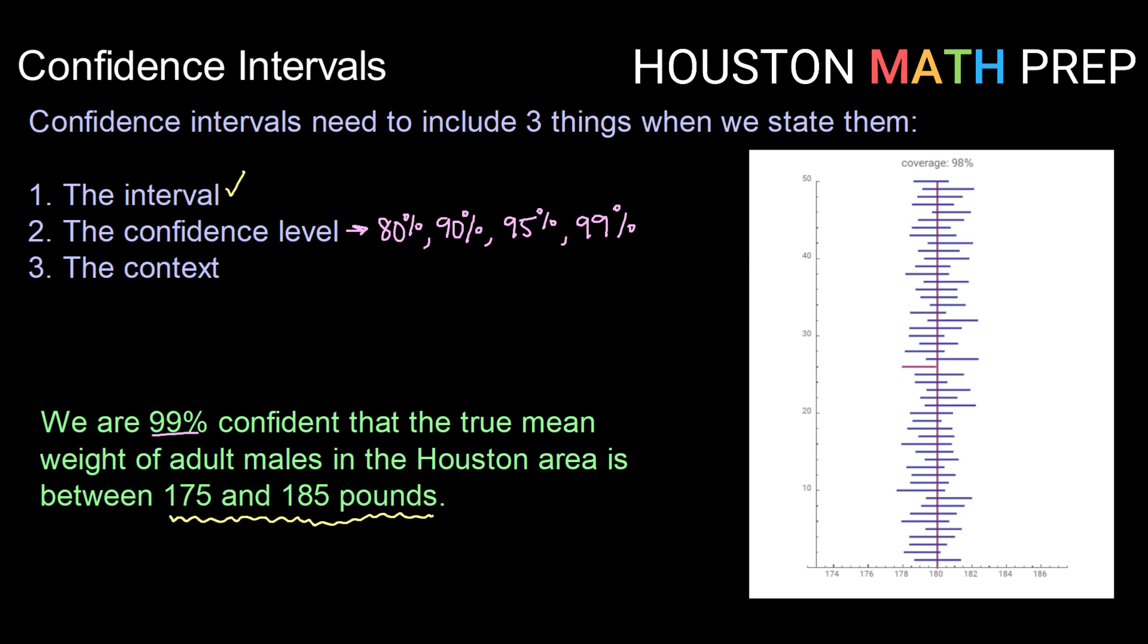We can look kind of at a picture here. So here is a picture of, in this vertical line here down the center, we have our true mean of 180. Let's say that that is the actual mean of the entire male population for their weight. And then here we can see 50 different confidence intervals based upon 50 different samples taken from that population. And so all the ones that are in blue here notice that they do intersect with that true mean. So the true mean of 180 is contained within the confidence interval.